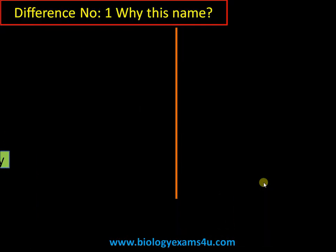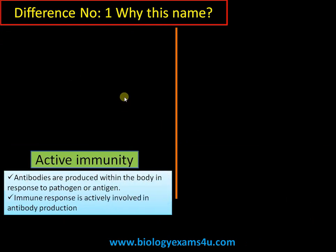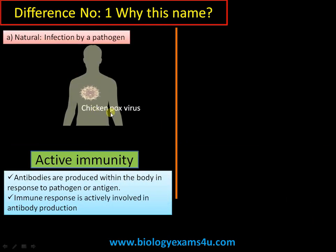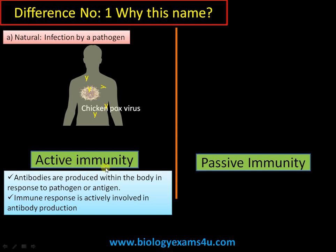Difference number one: why these names? In active immunity, once a pathogen has entered the body, the body is actively engaged in synthesizing specific antibodies against that particular pathogen. The body's involvement is very active in synthesizing those antibodies — that is why the term 'active immunity.'